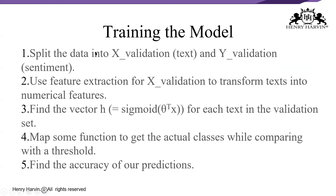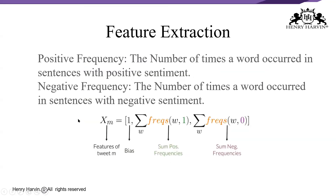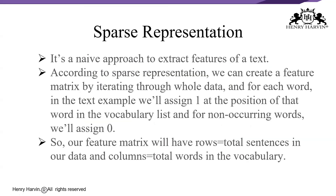For testing the model, we split the data into x_validation and y_validation sentiment, use feature extraction on x_validation to transform text into numerical features, find the vector h = sigmoid for each text in the validation set, map a function to get the actual classes by comparing with a threshold, and then find the accuracy of the prediction to determine sentiment.